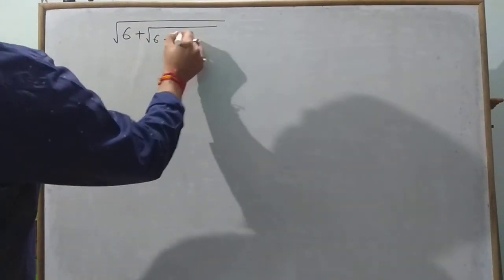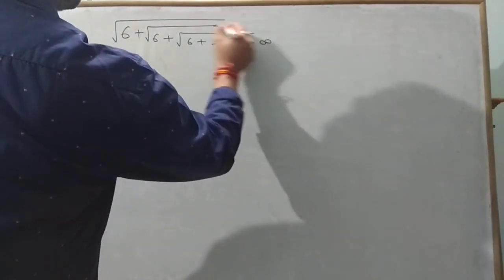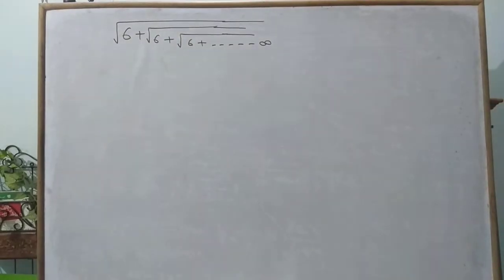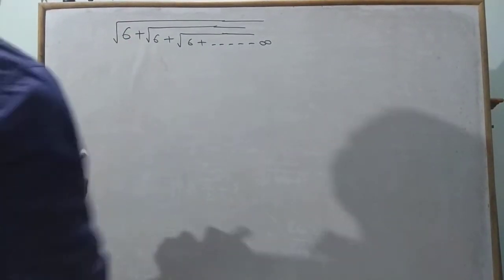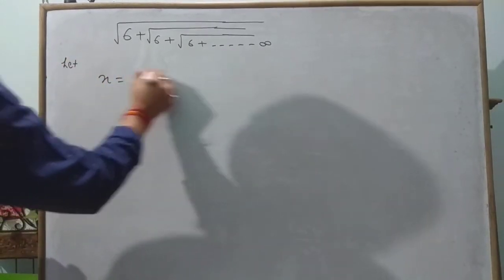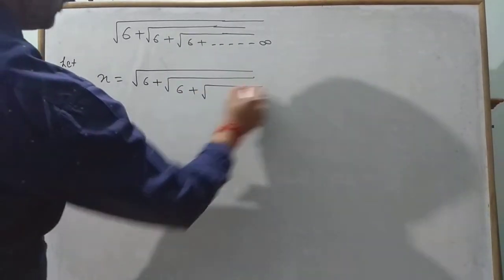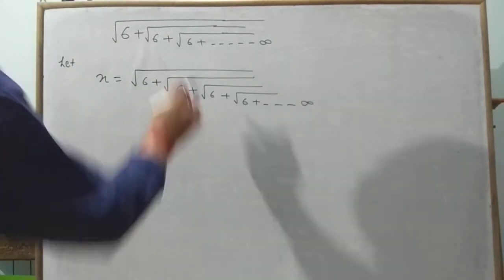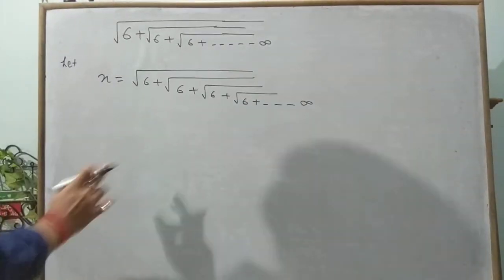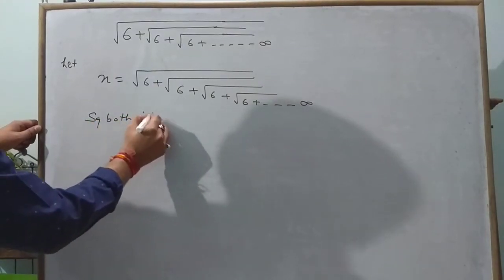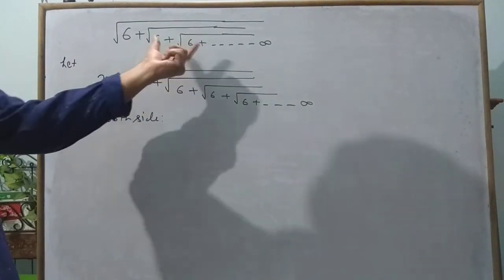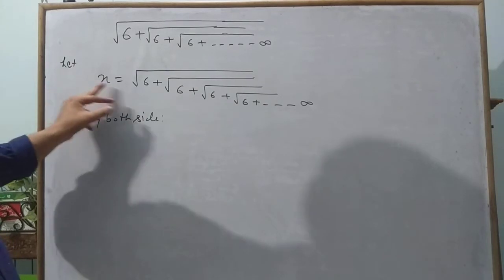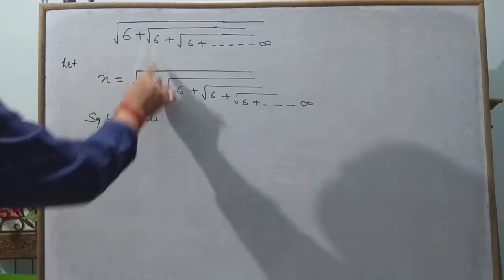Let us take a question: suppose √(6 + √(6 + √6...)) continuing till infinity. The question says solve √(6 + √(6 + √6...)) till infinity. In this case, we are not finding the value of root 6 with a calculator. So the process is: let x equal to √(6 + √(6 + √6...)) till infinity. Since this is going till infinity, it will run till infinite.